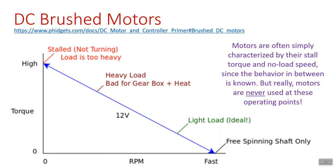You're going to be somewhere in between. As this is hinting at here, usually you want your motors to be running at a fairly light load — or at least on that side of it — so some torque, but closer to the higher end of the speed. And that's mainly because of where the efficiency is. We'll talk about that in a later slide.